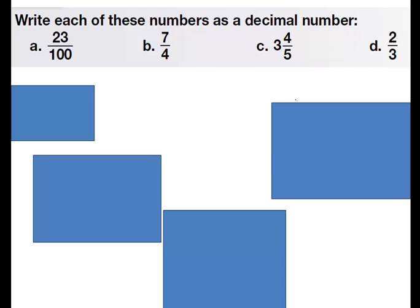Let's try a few of these. Write each of these numbers as a decimal number. See if you can do it before I do. Pause the video if you have to. So A, 23 over 100, that's going to be 0.23. This is just the reverse of what we learned, how to turn it into a fraction. We reverse it. We take the numerator and put it behind a decimal, and we get 0.23.